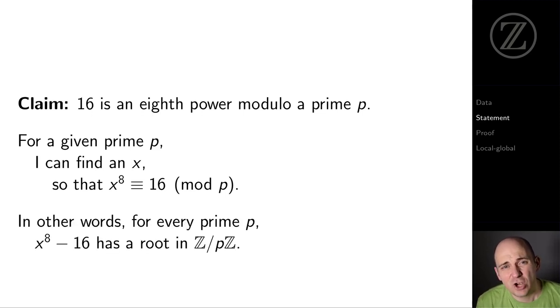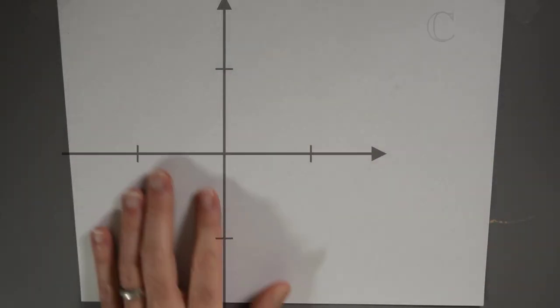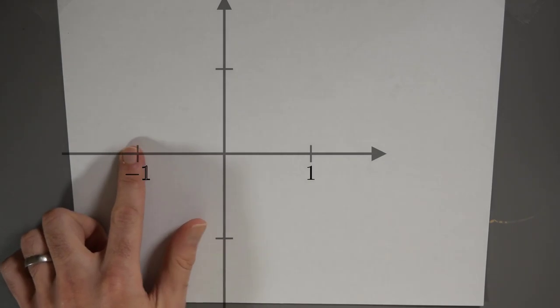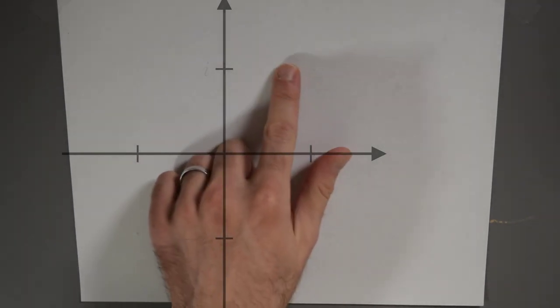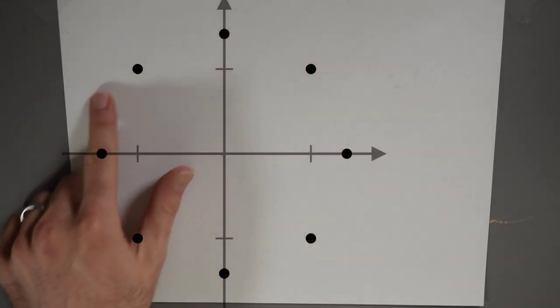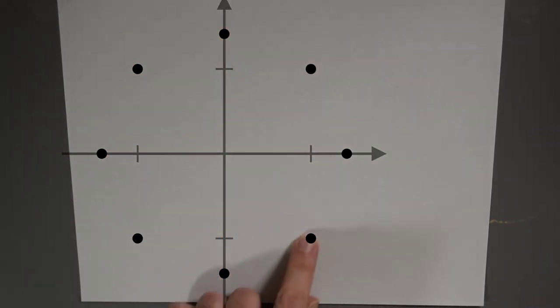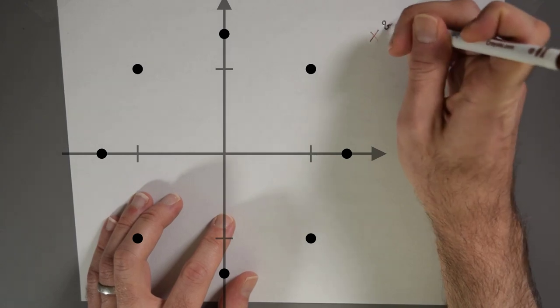In other words, I want to show that for every prime p, x to the 8th minus 16 has a root. Here I've got the complex plane. I've got 1 and minus 1, I've got i and minus i, and then here I've got the roots of x to the 8th minus 16.